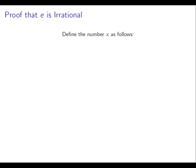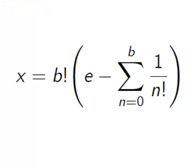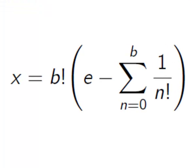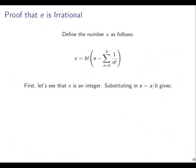So let's define our funny number as follows. We'll call it x. And x is going to be equal to b factorial — keeping in mind that b is the denominator in the rational expression of e, so we've written e as a over b assuming it's rational — multiplied by e, take the summation from n equals 0 up to b of 1 over n factorial. Now, let's firstly see that x is an integer.